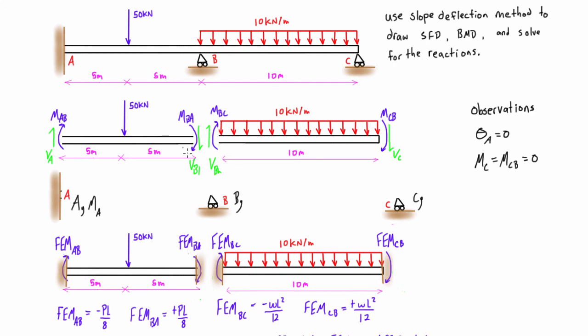And then the other observation that we can make is that here, right in the middle here, basically above the reaction at B, the sum of these moments has to be equal to zero. So MBA plus MBC has to equal zero, so MBA plus MBC must equal zero.